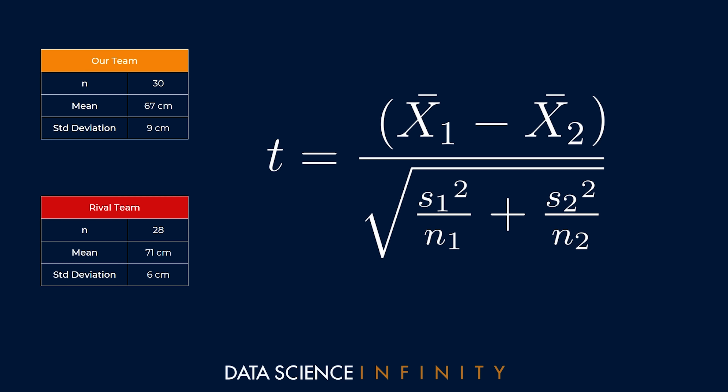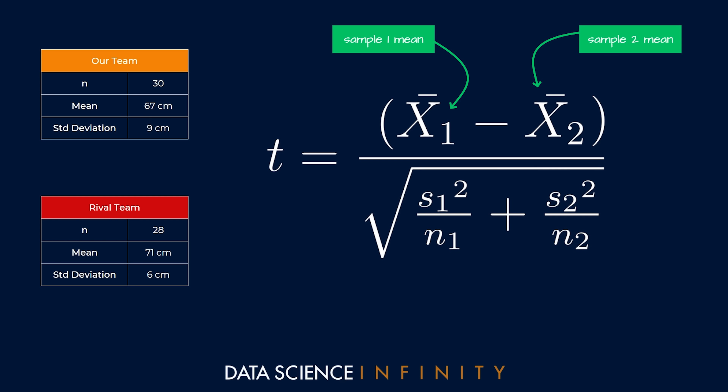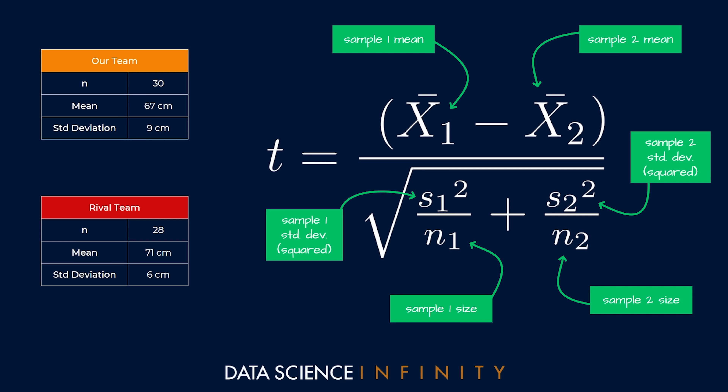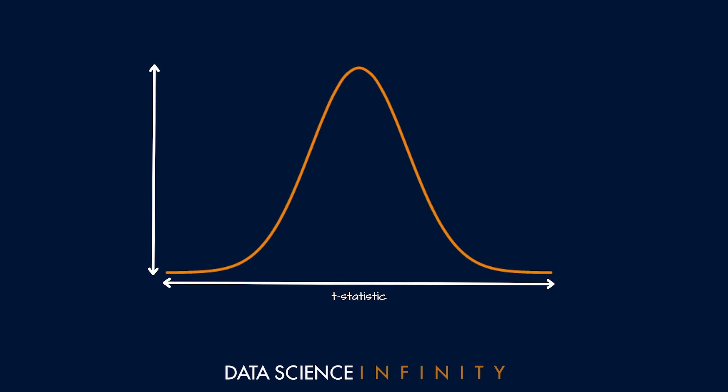Looking at the formula: the top row has the sample means for both teams, denoted x-bar 1 and x-bar 2. Under the square root we have the number of observations n1 and n2, and just above those we have the standard deviation for each sample — specifically squared. Putting this all together gives us t, the t-statistic, which tells us where on the t-distribution the difference in the two means lies and how likely we are to see this difference if the null hypothesis were true.